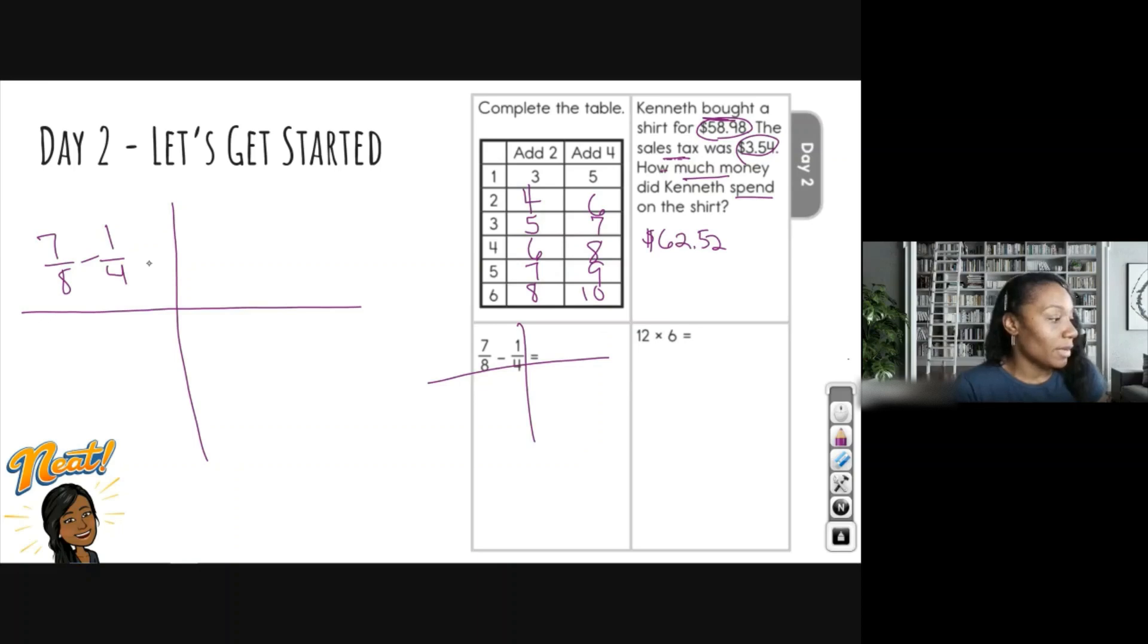All right. So now I'm going to list my multiples of my denominator. So I have four, eight, twelve, sixteen, and twenty. I'm going to stop right there. And I'm going to do my multiples for eight: eight, sixteen, twenty-four. I'm going to stop right there. We're looking for the least common denominator. So which number is the smallest number that is the same in both the multiples of four and eight? So that would be eight for both.